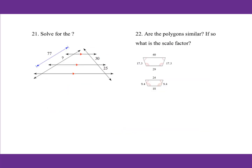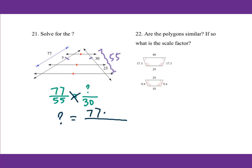For number 21, solve for the question mark. This question is about ratios. For three parallel lines, the ratio of corresponding parts are equal to each other. For 77, the corresponding sides will be 30 plus 25, that's 55. Therefore, 77 over 55 equals question mark over 30, because question mark and 30 are corresponding sides. Then cross multiply: question mark equals 77 times 30 over 55. Using a calculator, you get 42.